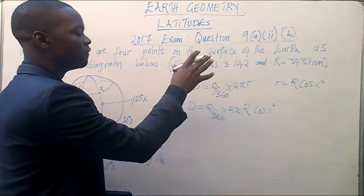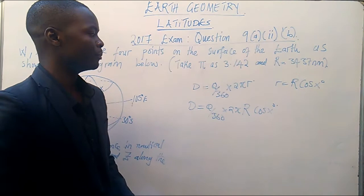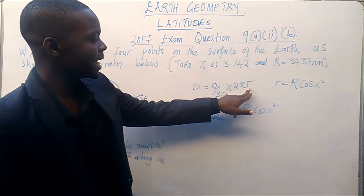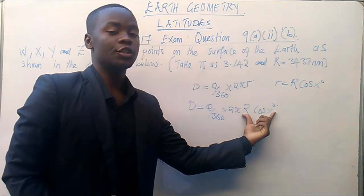That is, so this is where the formula which we stated in the first video is coming from. So this small r, we have substituted it with R cos x degrees.